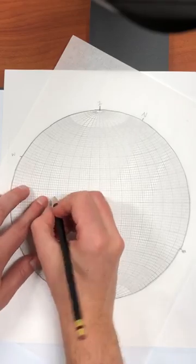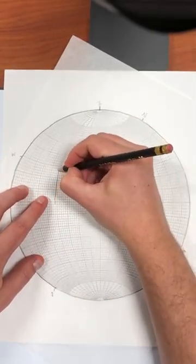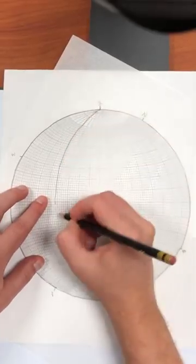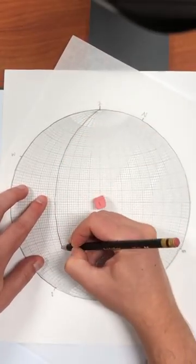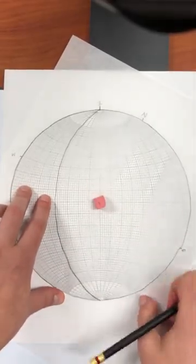And because a limb is a plane it plots as a line on a stereonet, so I'm gonna complete this sketch. All right and I'm gonna rotate it back to north.